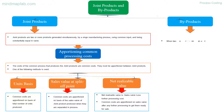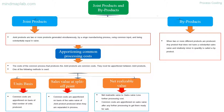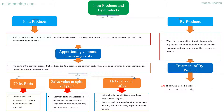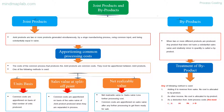By-products: when two or more different products are produced, any product that does not have a substantial sales value and is relatively minor in quantity is called a by-product. Treatment of by-products can use any of the following methods: adding it to revenue from sales, recording it as other income — in both cases no cost is allocated to the by-product — or as a deduction from joint process costs, which is the most common method. The by-product is measured at scrap value, similar to normal loss.